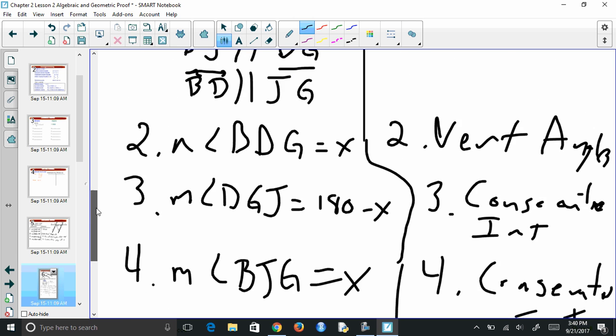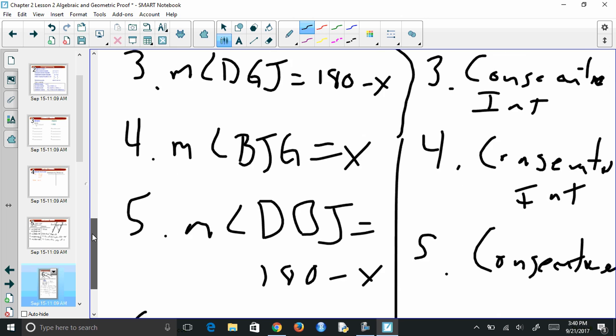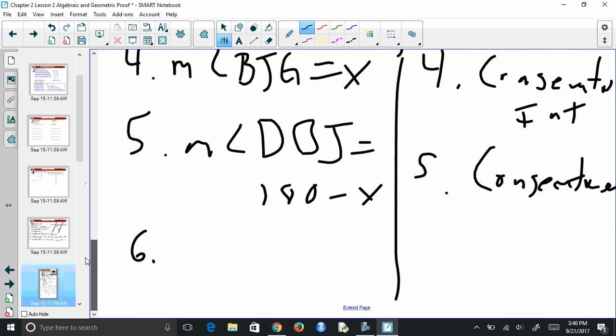Now my four interior angles are x, 180 minus x, x, and 180 minus x. So I have x plus 180 minus x plus x plus 180 minus x equals 360. And the reason I know that's true is those are just interior angles of the parallelogram.